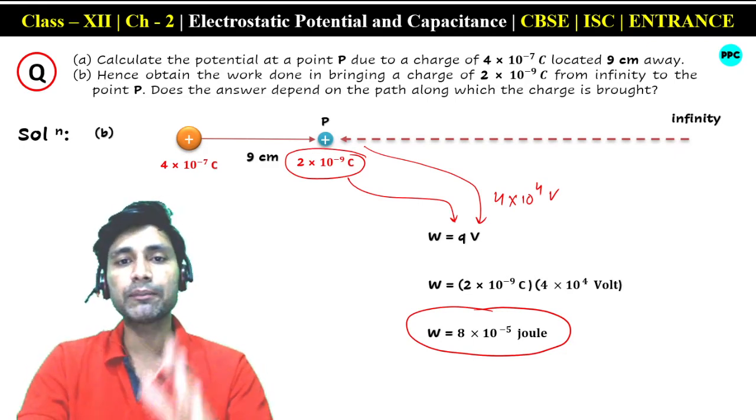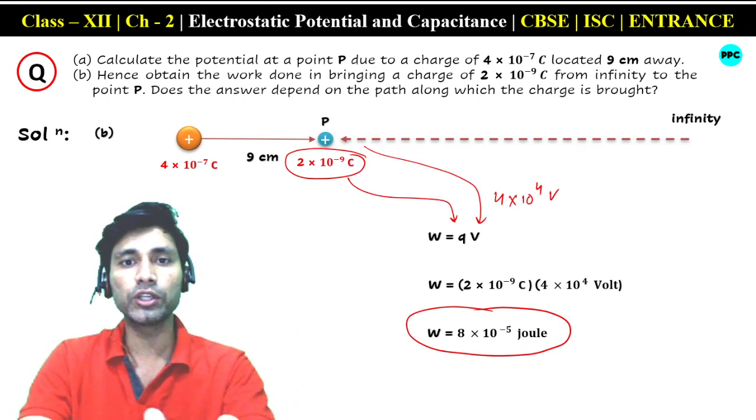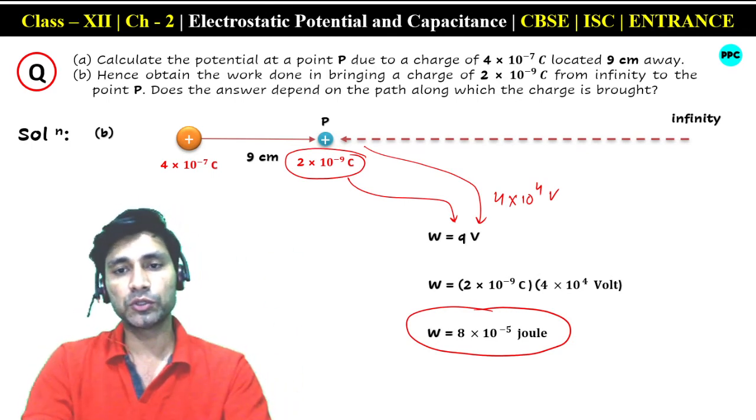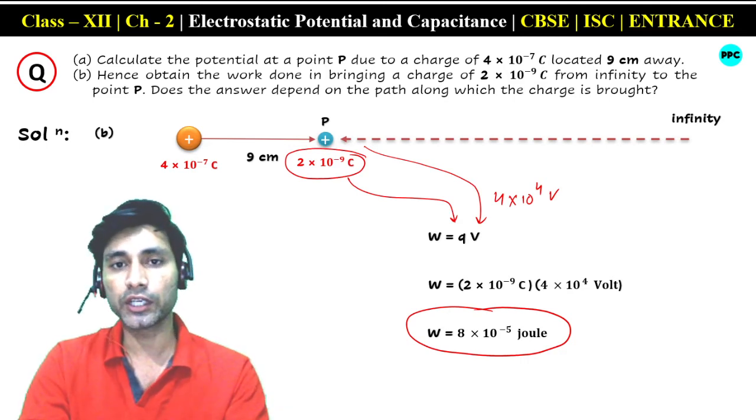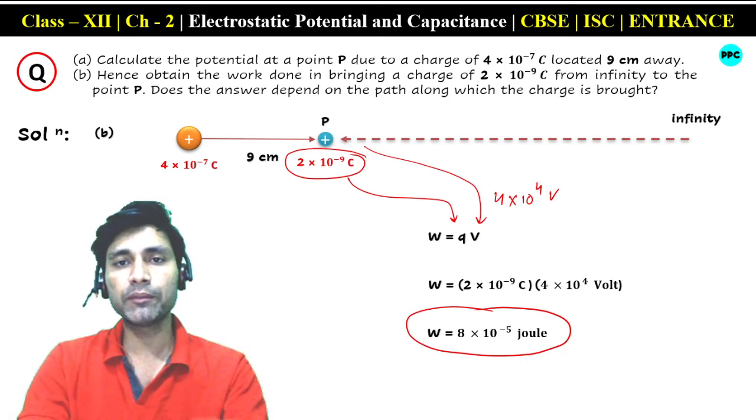As long as you bring the charge from infinity to that same point P. If you go to a different point, the work will be different because the potential is different. But if two points have the same potential, then the work will be the same.